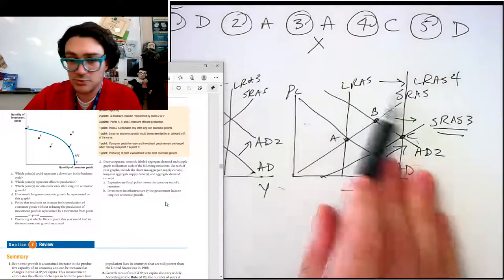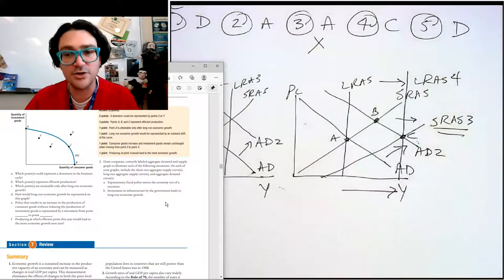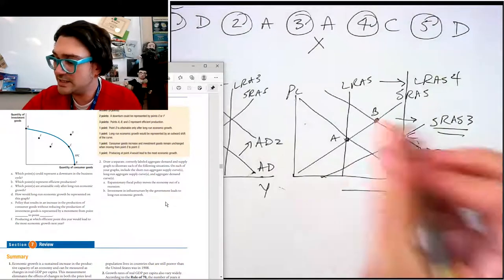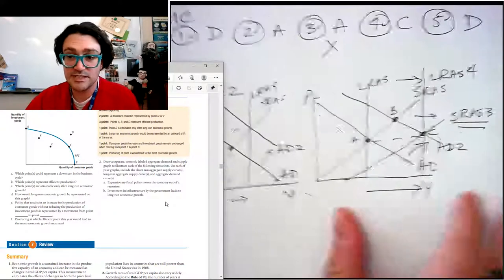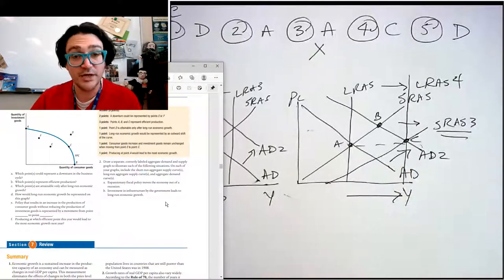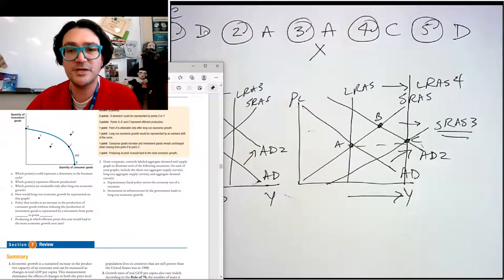And if that's a permanent increase, which it is, then the LRAS is going to also move with them, leading us to have the same crisis that we were at before, but a significantly larger amount of real and potential output. All right. Hopefully that helped you. See you next time.